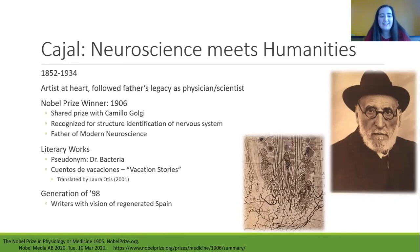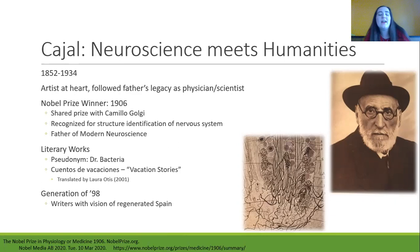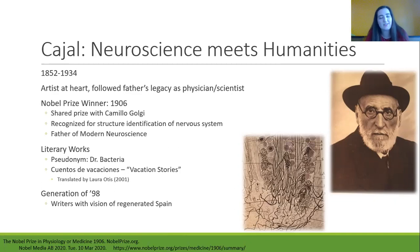One last thing to know about Cajal is that he is part of the Generation of 98, or the 'Noventayochistas.' This group of writers had one thing in common: they really used writing as their medium for showing their opinions about regenerating Spain — how could Spain thrive again — and they used their writings to express that opinion.